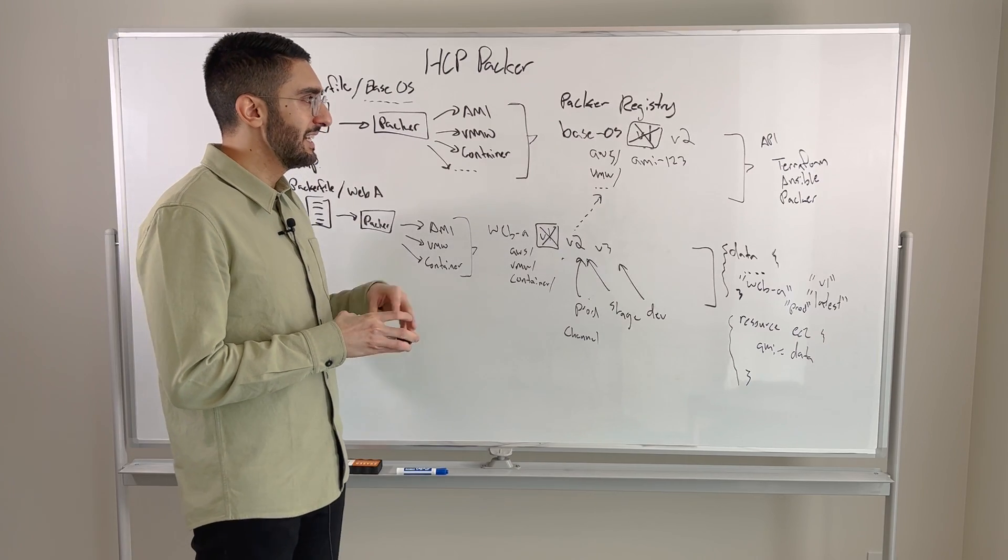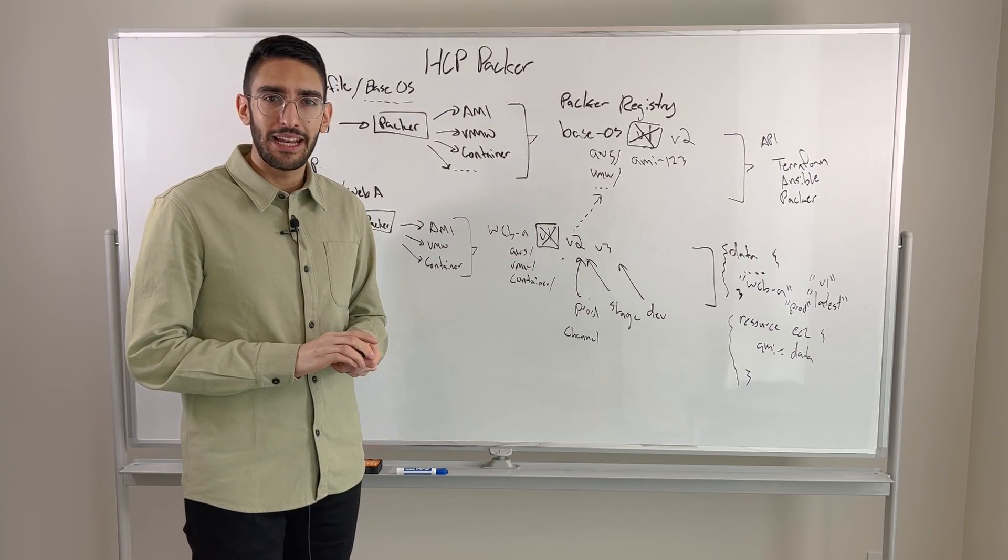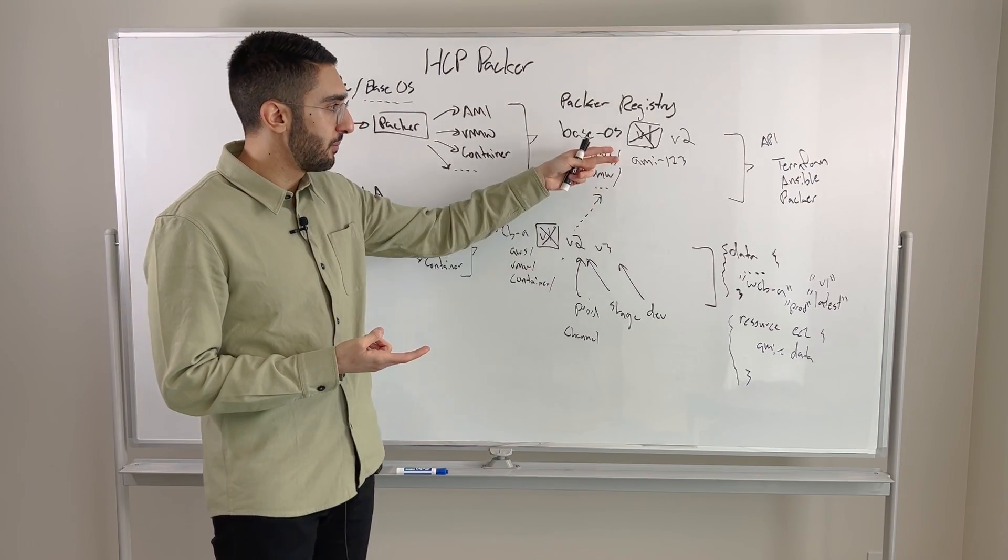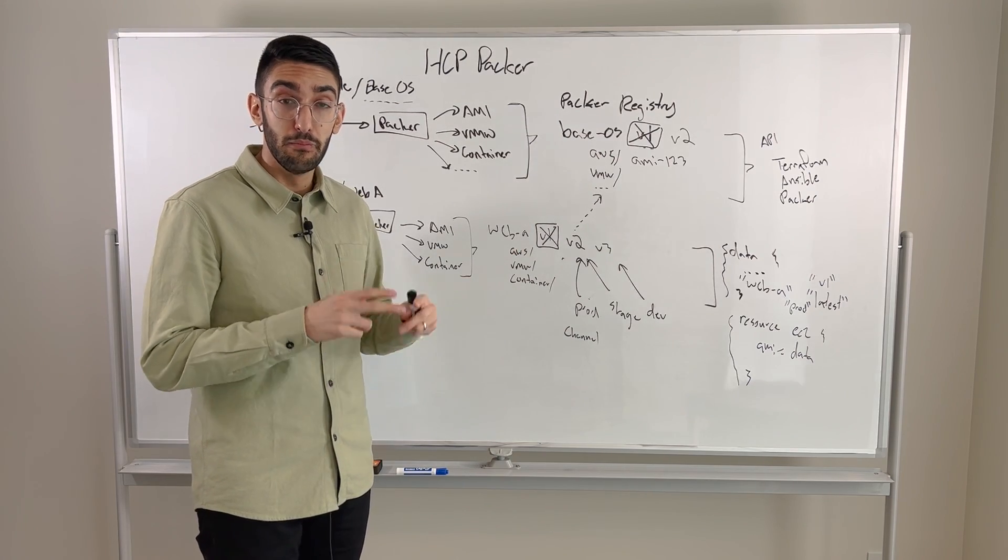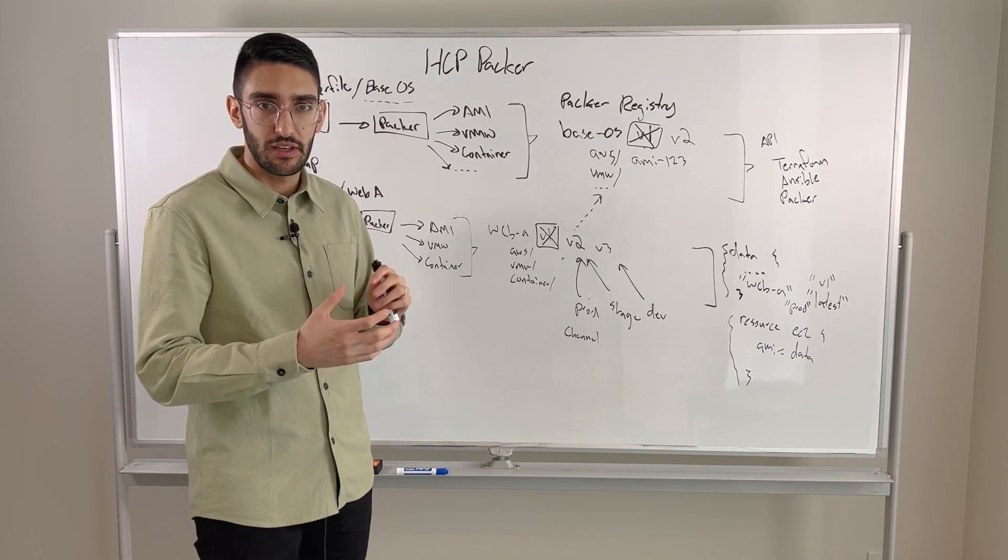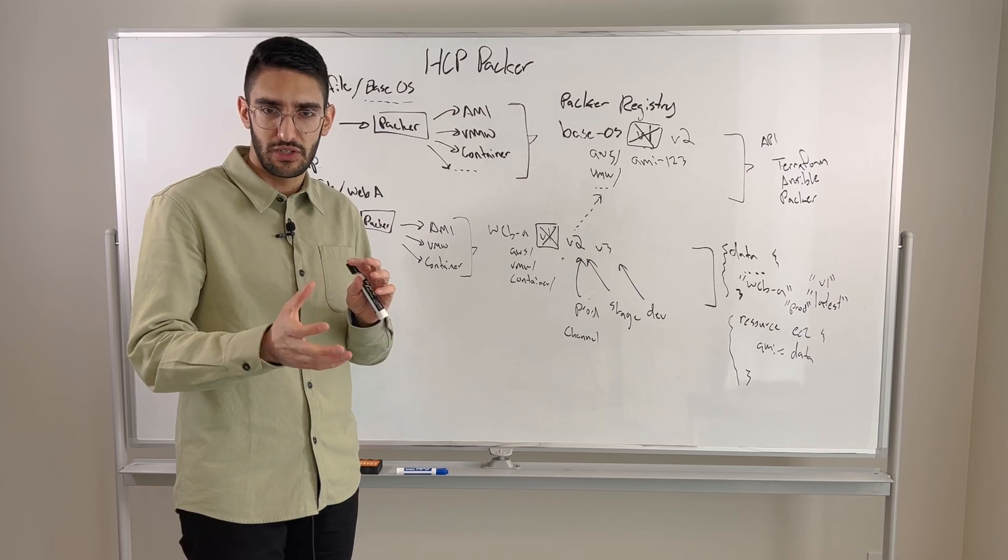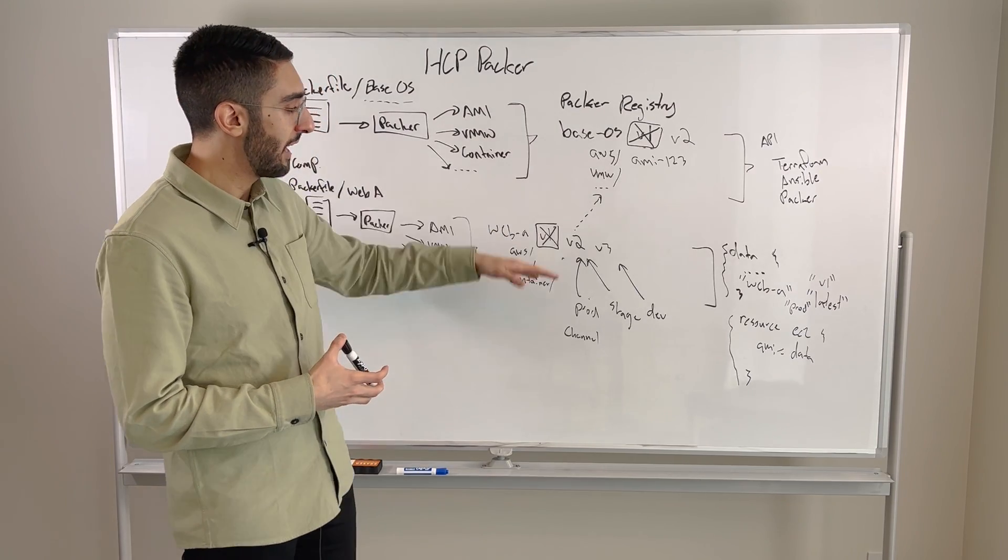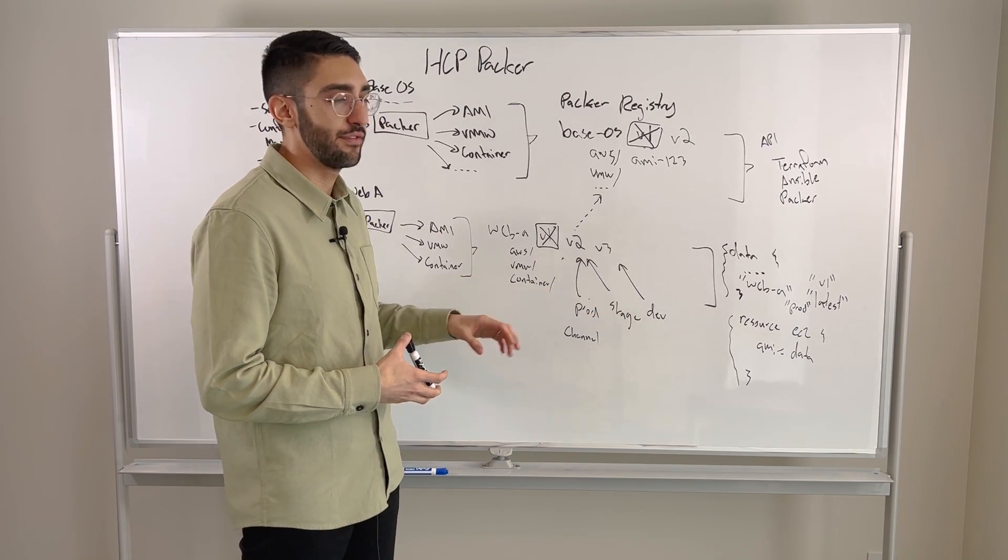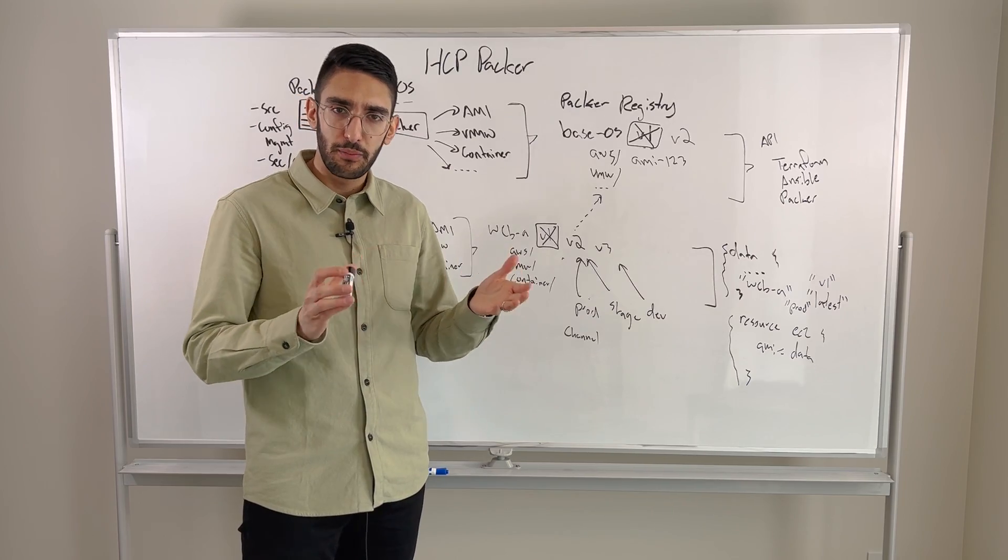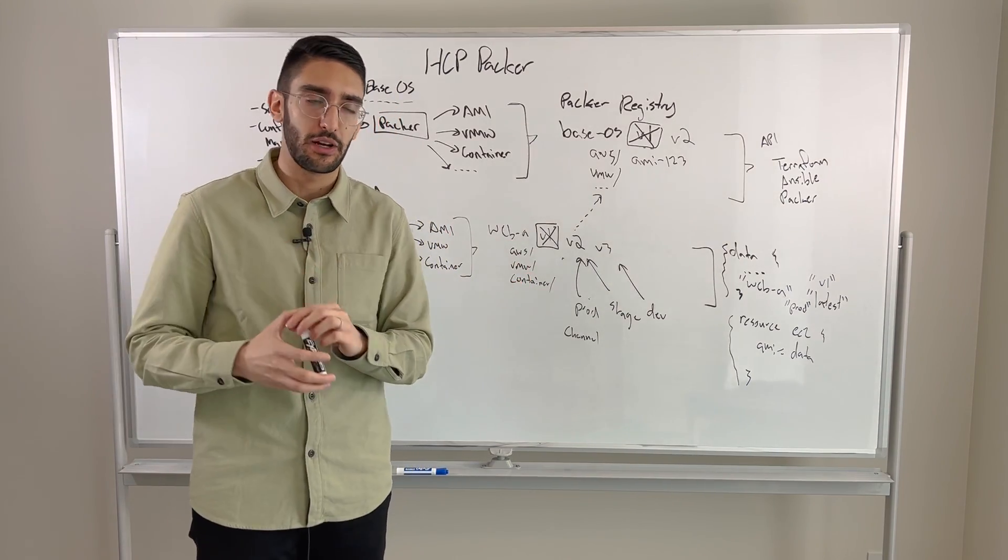So the Packer registry is really designed to start giving us that kind of metadata around versioning multiple different release modes. If we have an AMI versus a VMware image, those need to be used differently based on the environment we're in. And then release channels really give us that sophistication to be able to manage multiple environments and promoting from development through to production.